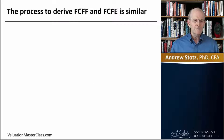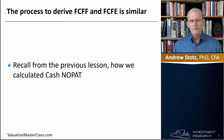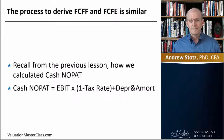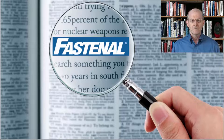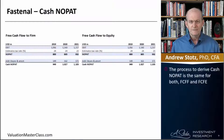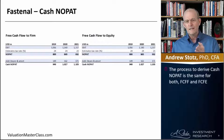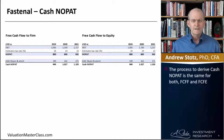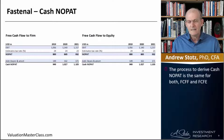The process to derive free cash flow to firm and free cash flow to equity is similar. Recall from the previous lesson how we calculated cash NOPAT. Cash NOPAT is equal to EBIT times one minus the tax rate, plus the depreciation amount. Here we can look at Fastenal and calculate the free cash flow to firm on one side and the free cash flow to equity on the other. The process is exactly the same, and we're going to calculate these side by side.